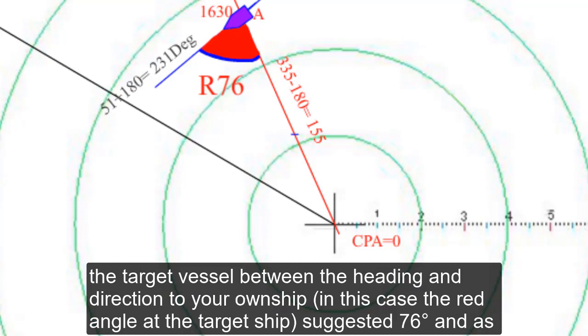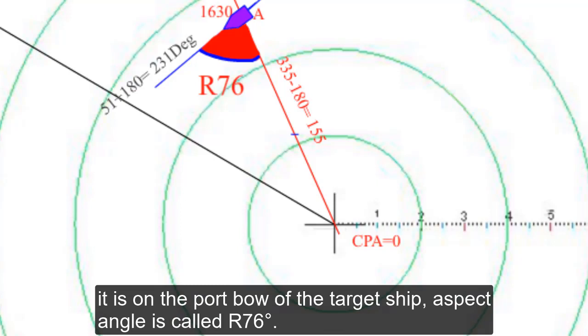In this case, the red angle at the target ship suggests 76 degrees. And as it is on the port bow of the target ship, the aspect angle is called R76 degrees.